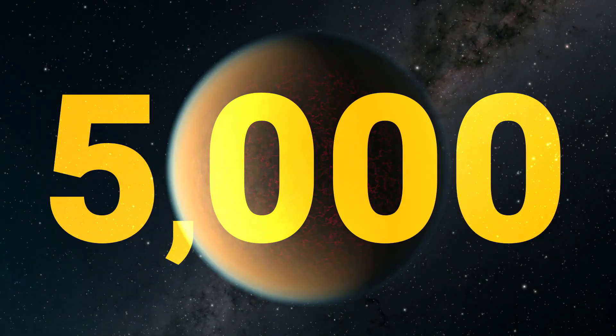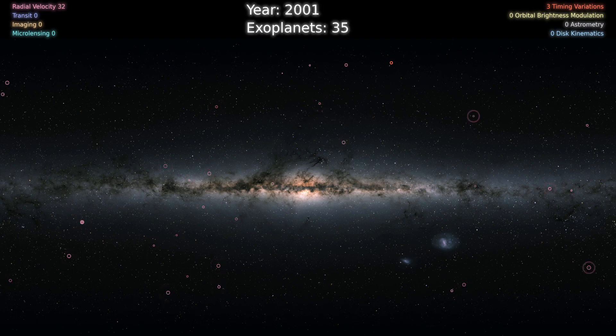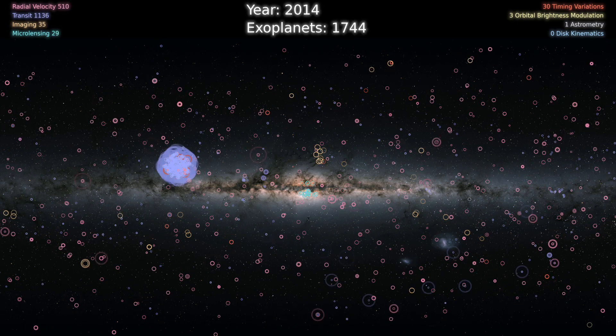We didn't even know other planets existed outside of our solar system until 1992, only three decades ago, and now in less than half a lifetime, we've found thousands of planets ranging in sizes, orbits, and composition.